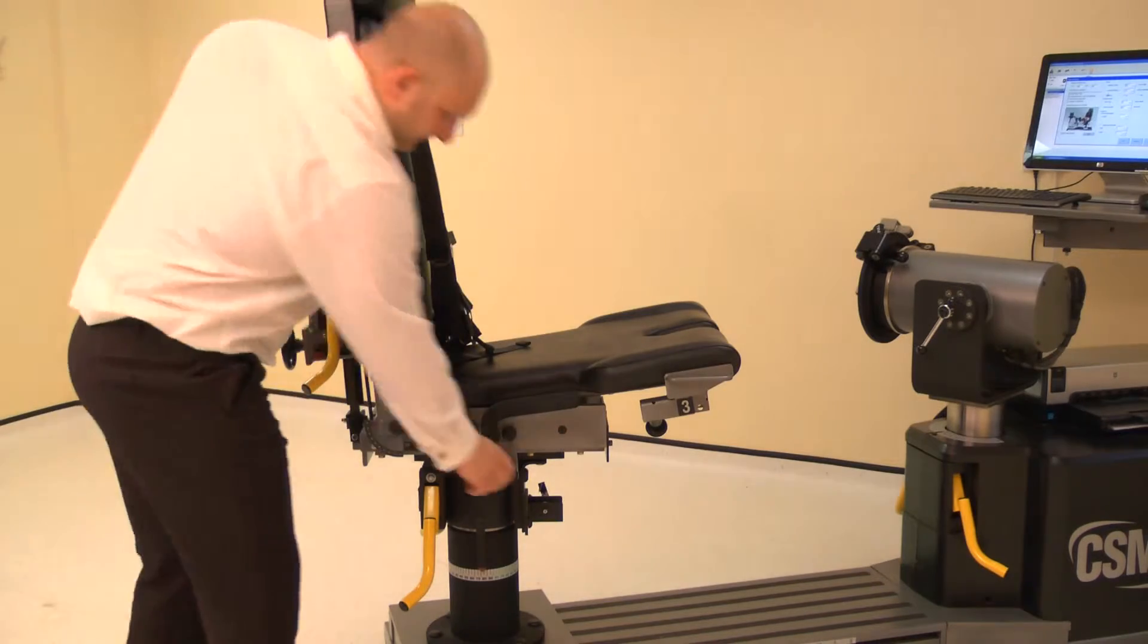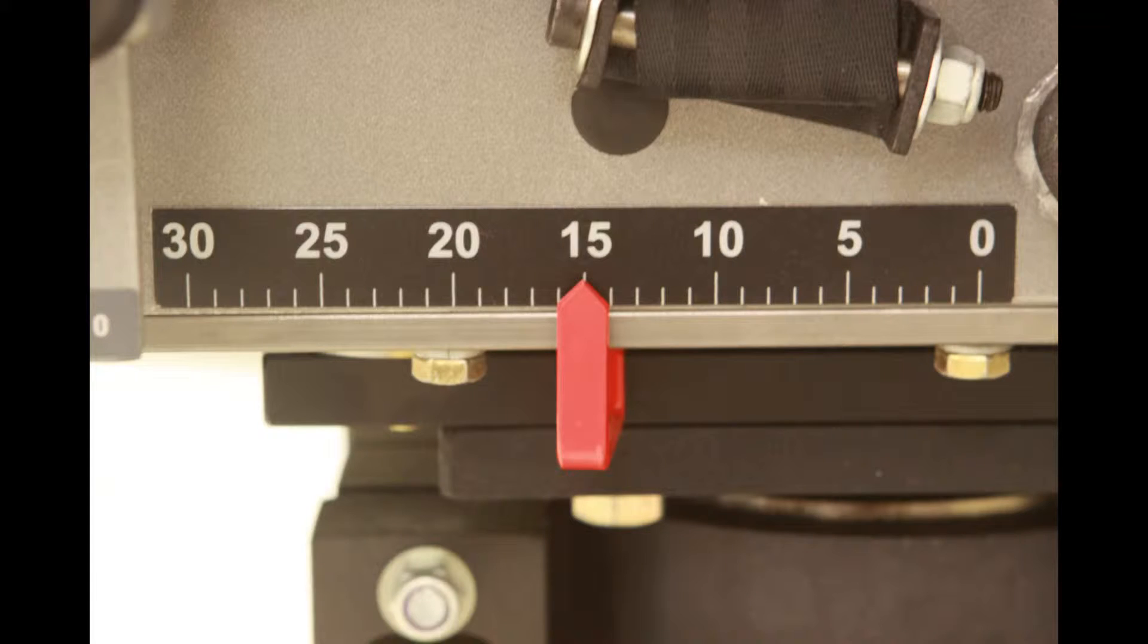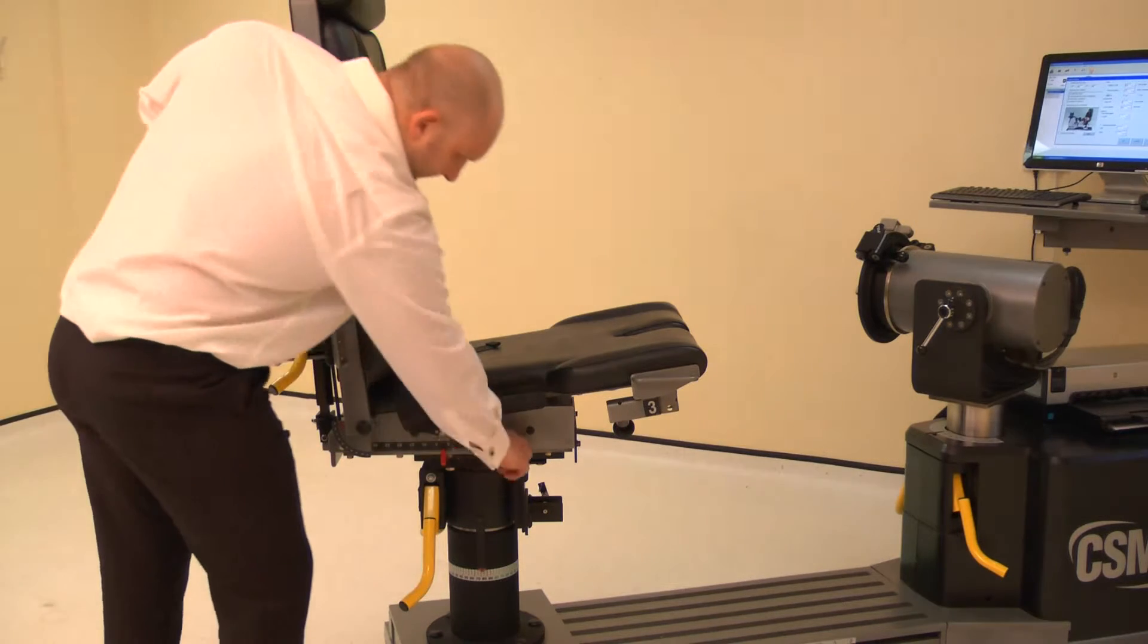The chair fore aft is altered by raising either locking handle, then slide the chair bottom forwards or backwards. Adjust the chair fore aft to position 15. Lower the locking handle to secure.